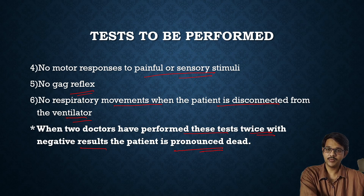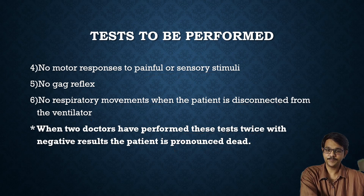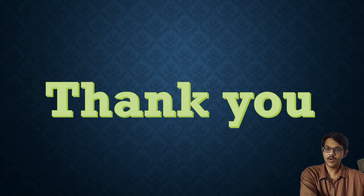After declaring brain stem death, if all the organs are also dead the patient is sent for cremation or given to relatives. If the patient had donated his organs, a brain-dead person can donate organs such as the liver or kidney. For organ donation, the person has to be declared brain stem dead. Thank you — I hope you understood about diagnosing brain stem death.